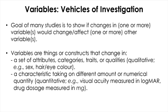Variables are basically the things or constructs that change in either a set of attributes, categories, traits, or qualities. If the things are changing in these kinds of properties, then we can call these qualitative variables. Examples of such variables are sex or color of someone's hair or eye, because the values you can assign to these variables are qualities or categories. Sometimes the qualitative variables are also called categorical variables.